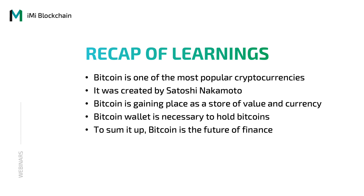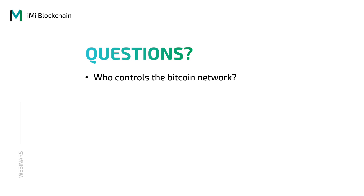Now let's move on to our Q&A session. The first question we received is: who controls the Bitcoin network? The answer is simple — no one does. That's what is so great about it. Due to the decentralization, the control remains with the participants. This not only makes the transactions secure and transparent, but makes them cheaper too by lowering the processing fees.